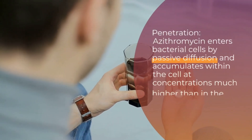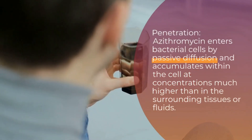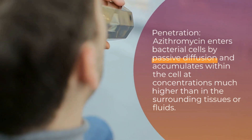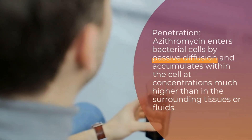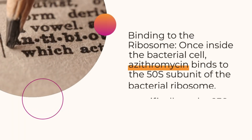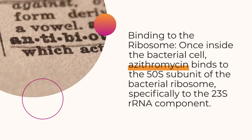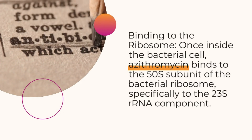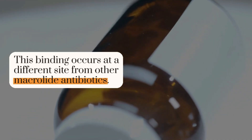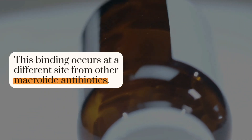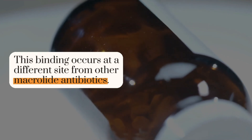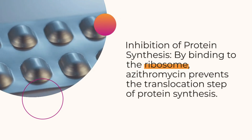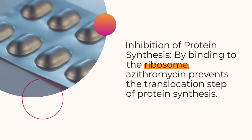Azithromycin enters bacterial cells by passive diffusion and accumulates within the cell at concentrations much higher than in the surrounding tissues or fluids. Once inside the bacterial cell, azithromycin binds to the 50S subunit of the bacterial ribosome, specifically to the 23S rRNA component. This binding occurs at a different site from other macrolide antibiotics.